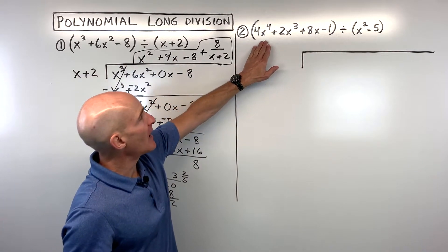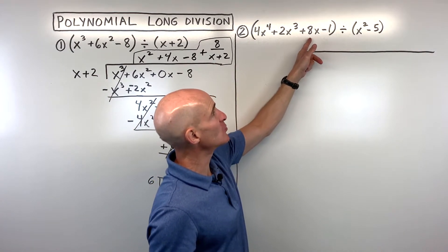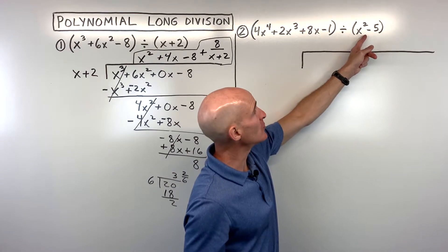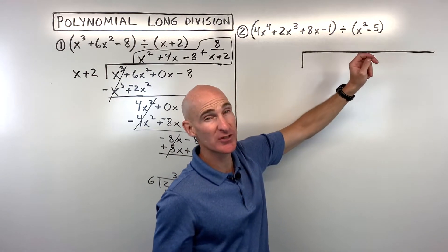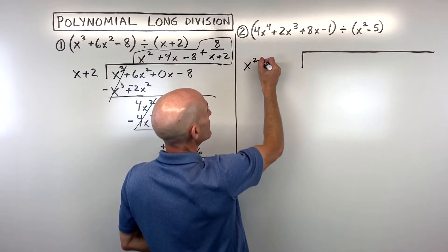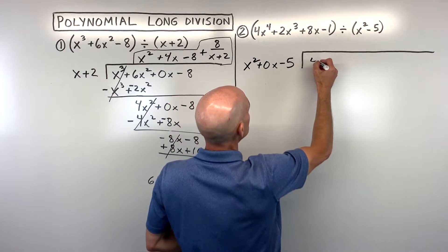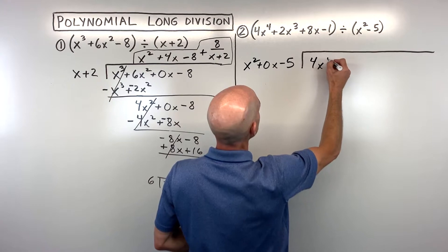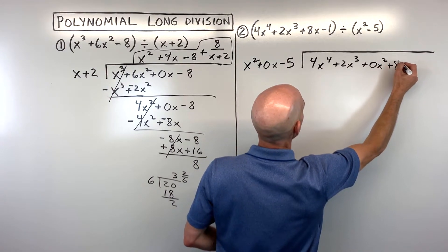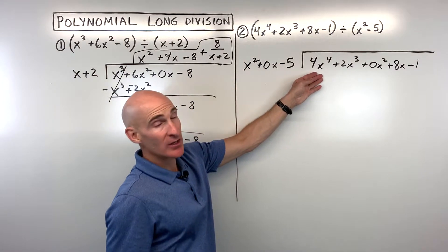Let's look at number 2. We've got 4x to the 4th plus 2x cubed plus 8x minus 1. Notice it skips from x cubed to x to the first — so we'll need to put a placeholder there. And we're dividing by x squared minus 5. Notice there's also a missing term in the divisor. The setup is x squared plus 0x minus 5 on the outside, and 4x to the 4th plus 2x cubed plus 0x squared plus 8x minus 1 on the inside.